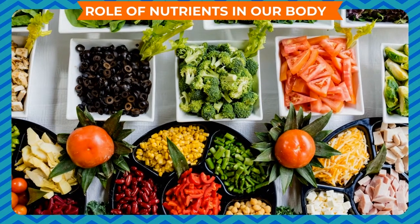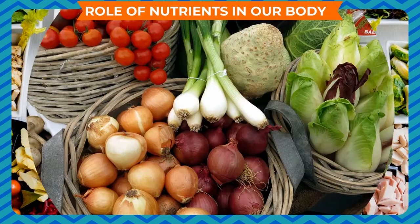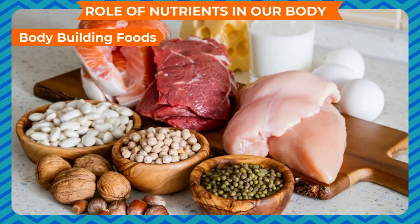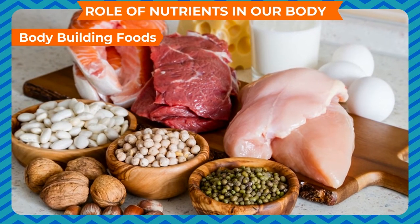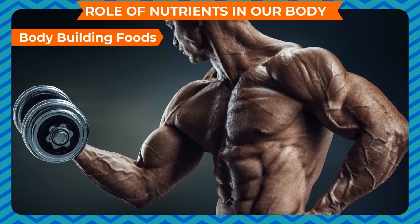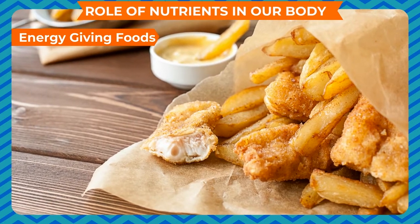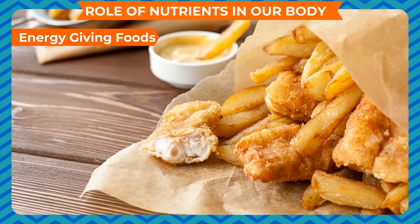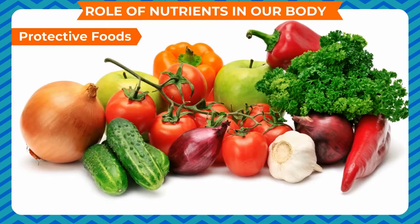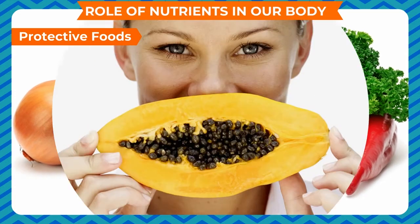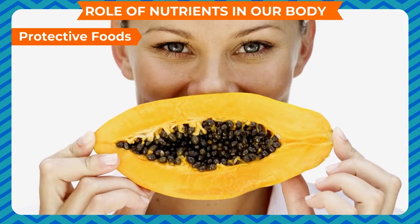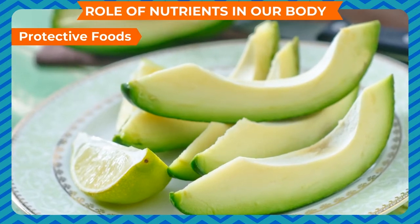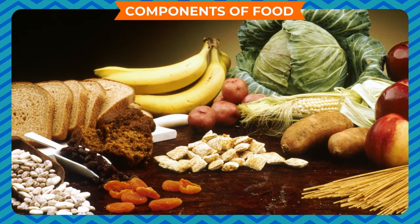On the basis of functions the nutrients perform, we can group them into three categories. Body-building foods are rich in protein and help our body grow. Energy-giving foods are rich in carbohydrates and fats and provide energy to our body to function. Protective foods are rich in vitamins and minerals; they protect our body from diseases, strengthen our immune system, and regulate our metabolism.